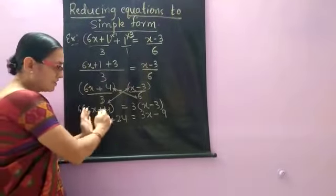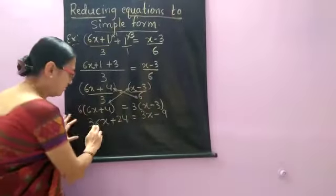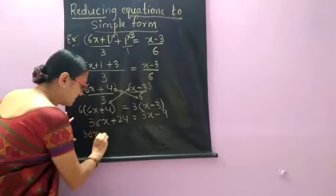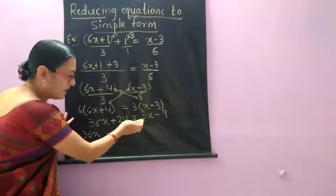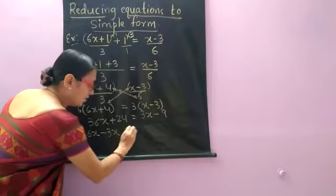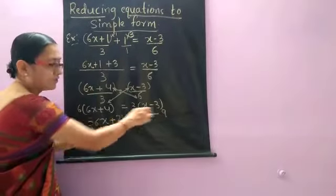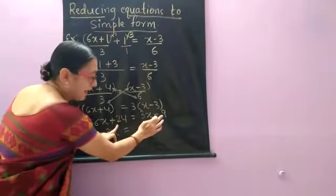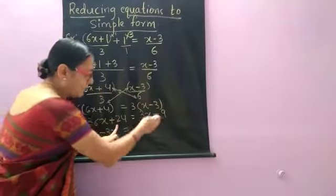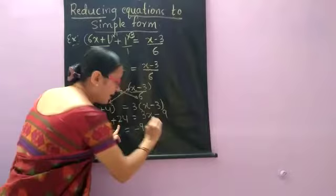Shift variables one side, shift constant on the other side now. Now 3x we are shifting this side. It will be 36x is as it is. Plus 3x shifting on left side becomes minus 3x equal to as it is. We are shifting this 24 on that side now. This minus 9 was as it is there only.